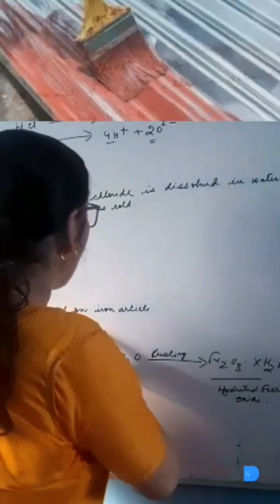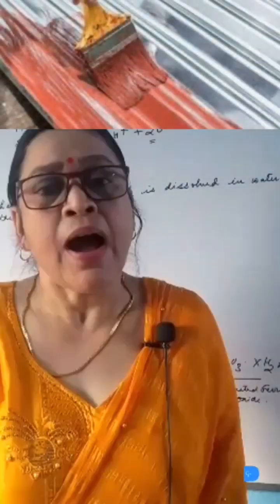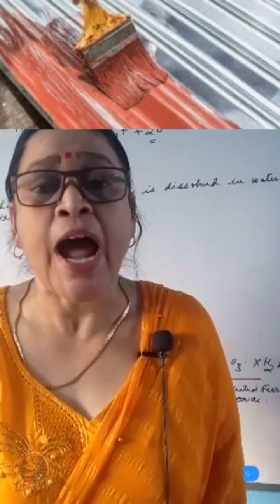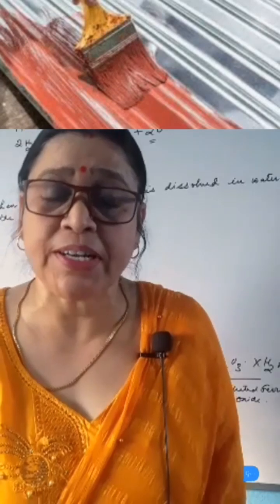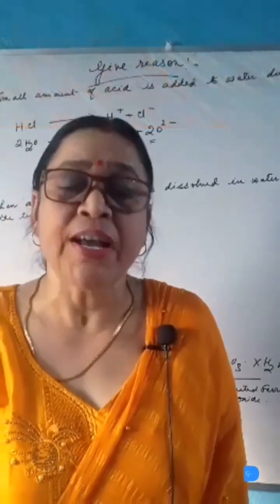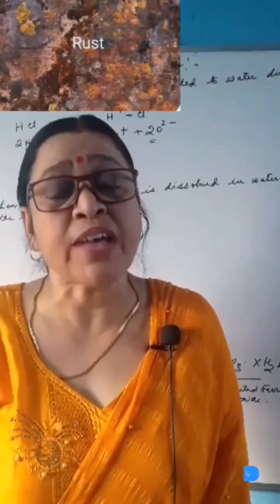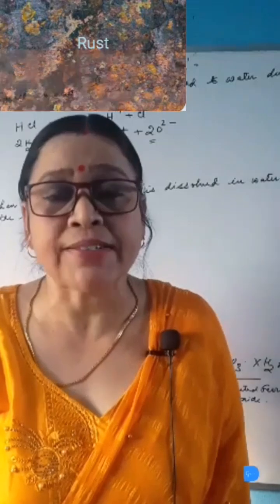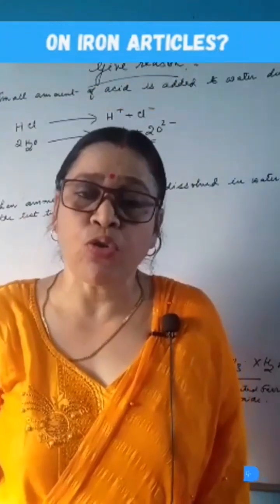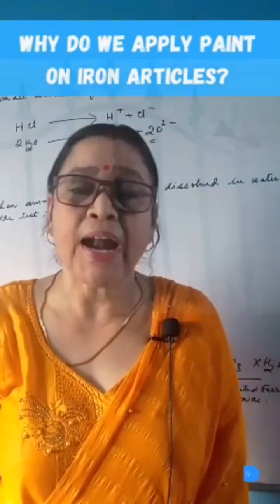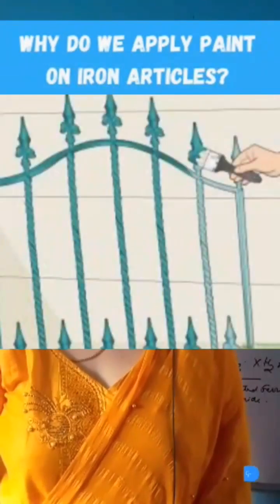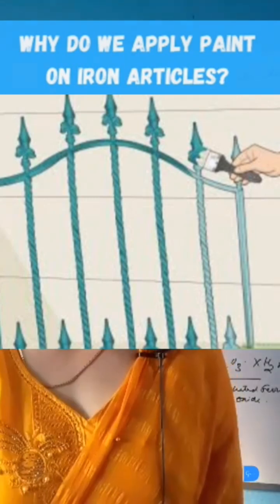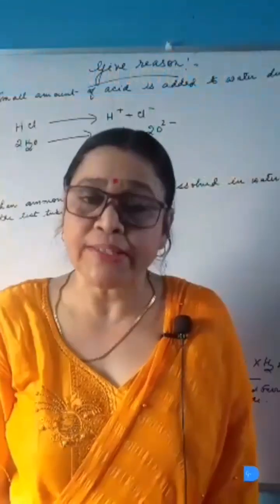Paint is applied on iron articles. When iron articles come in contact with air and moisture present in the atmosphere, they form hydrated ferric oxide, which is known as rust. This rusting corrodes the iron article. So, if we apply paint on the iron articles, then it will protect them from rusting.